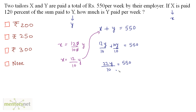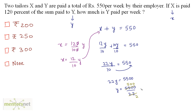The 10 goes to the right side, so 22y is equal to 5500, and y is equal to 5500 by 22. Dividing the numerator and denominator by 11, we get 500 by 2, which is 250. So y is paid 250 rupees per week.